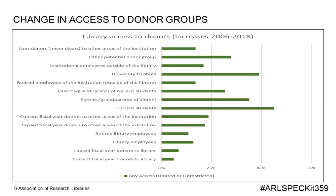We wanted to see what kind of change there was in access over the 12-year period from 2006 to 2018. We combined both limited or restricted access and unrestricted access to get a total idea of access to donors and looked at the change over time. It is worth noting that all combined access to all donor groups increased during this period. Library employees, retired employees, institutional employees outside the library, non-donors, and retired employees of the institution outside the library all went up 10 to 20%. The rest increased even more significantly between 2006 and 2018.